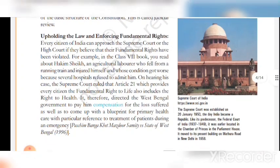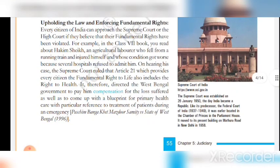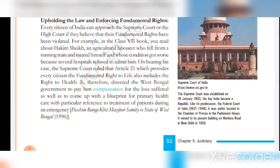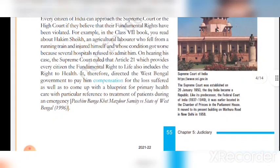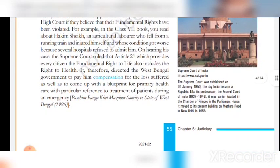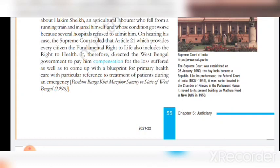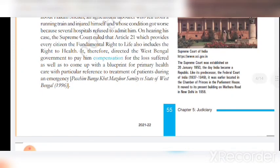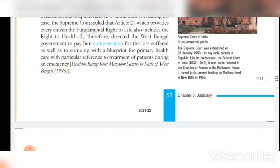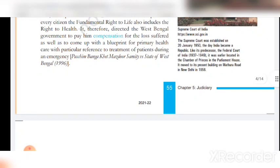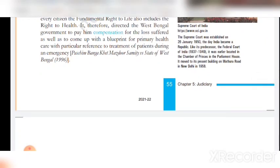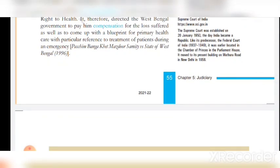This is called Judicial Review. Upholding the law and enforcing fundamental rights: Every citizen of India can approach the Supreme Court or the High Court if they believe that their fundamental rights have been violated. For example, in the Class 7 book, you read about Hakeem Sheik, an agricultural laborer who fell from a running train and injured himself, and whose condition got worse because several hospitals refused to admit him. On hearing his case, the Supreme Court ruled that Article 21, which provides every citizen the fundamental right to life, also includes the right to health. It therefore directed the West Bengal government to pay him compensation for the losses suffered, as well as to come up with a blueprint for primary health care with particular reference to treatment of patients during an emergency.